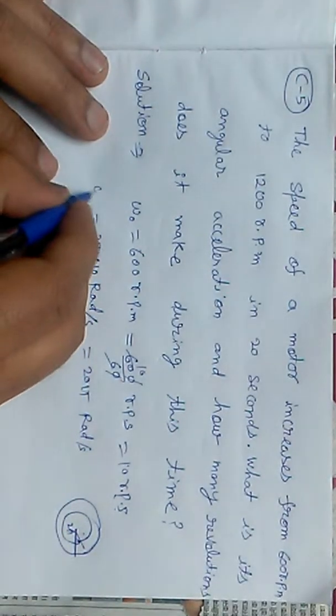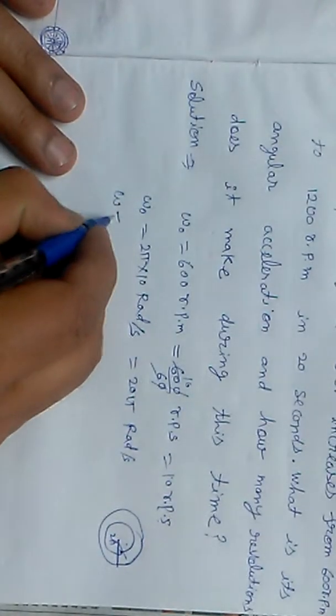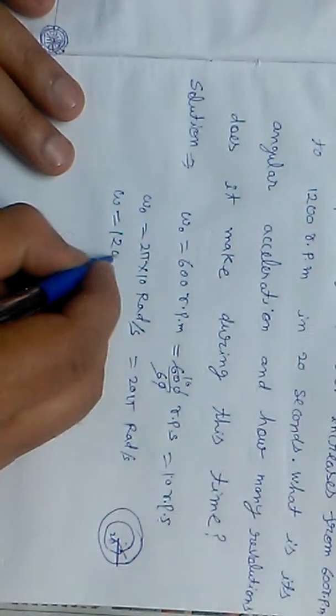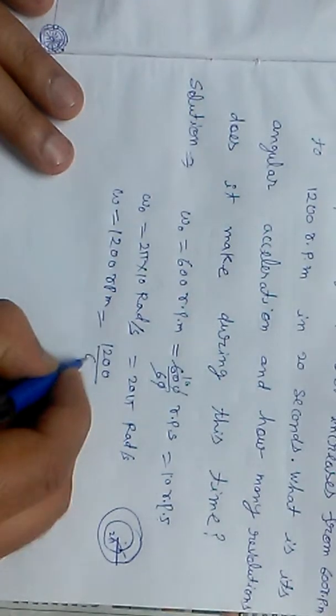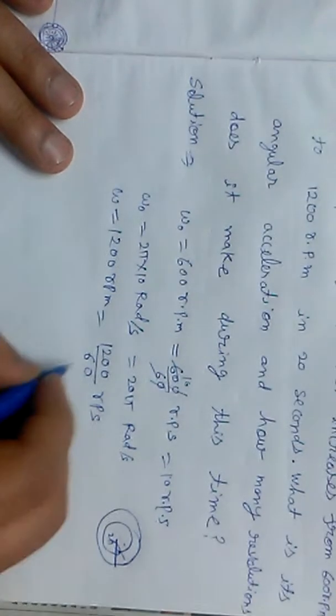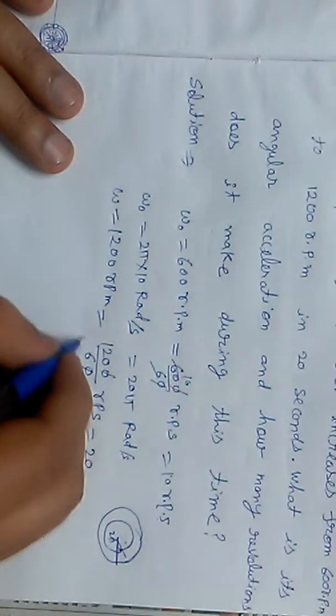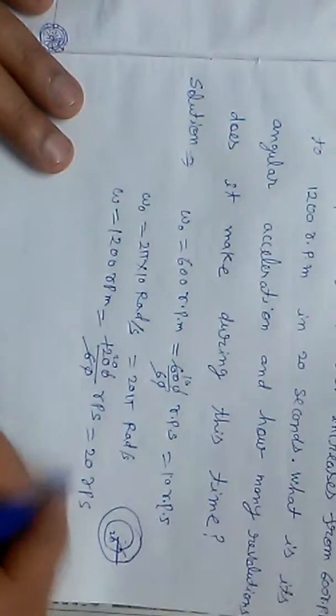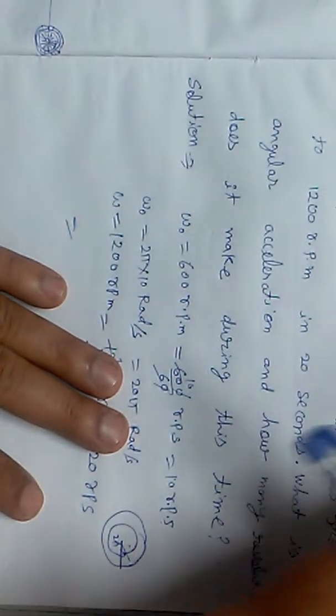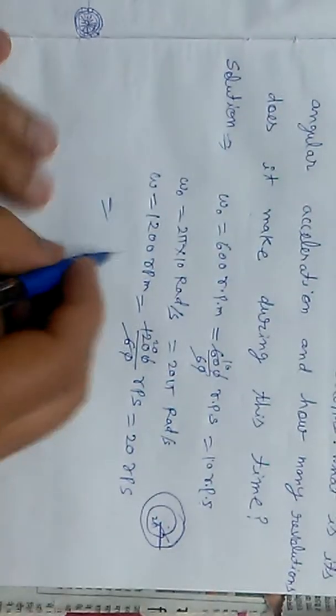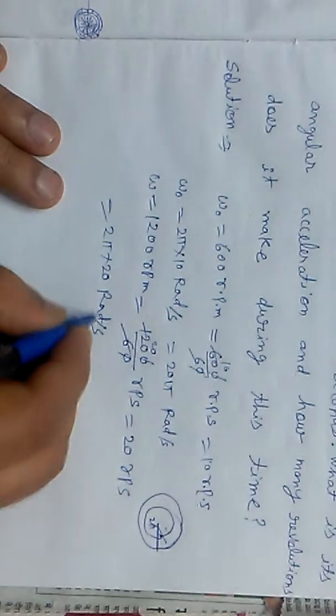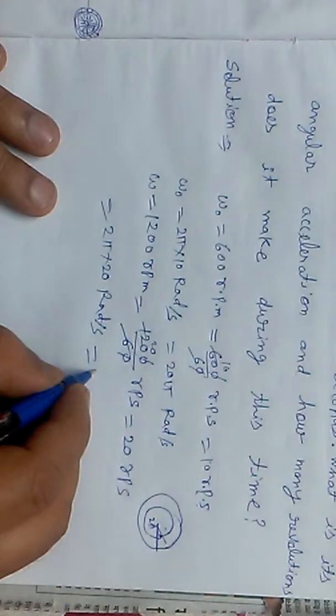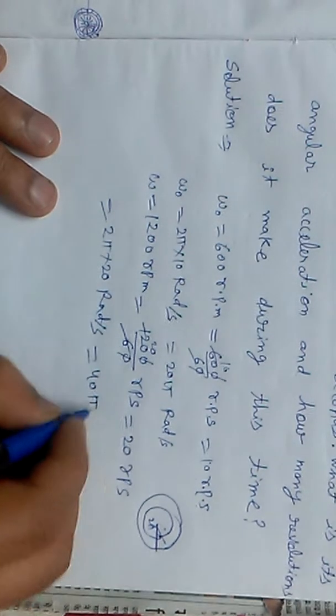So the initial angular speed will be 20 pi radians per second. Now the final angular speed, denoted by omega, has value 1200 rpm. We divide by 60 to get revolution per second, which gives 20 rps. Then multiply by 2 pi to convert to radians per second.